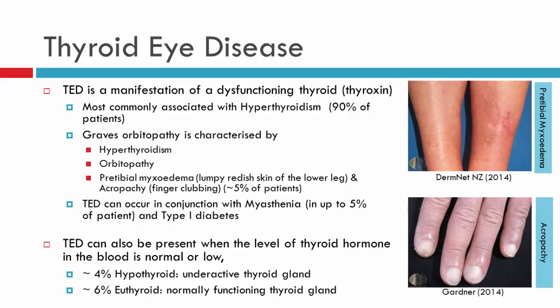Graves' Orbitopathy is part of an autoimmune disease which is composed of three things: hyperthyroidism, orbitopathy, and pre-tibial myxedema and acropachia finger clubbing. Over to the right we have myxedema shown on the left leg — this is a relatively mild form. Below, we can see the finger clubbing and inflammation at the tips of the fingers. Not all patients will exhibit these signs; it's usually only about 5% of patients who have myxedema and acropachia in addition to the hyperthyroidism and orbitopathy.